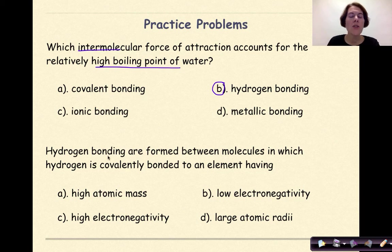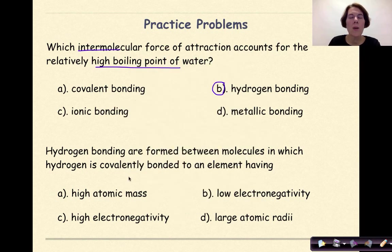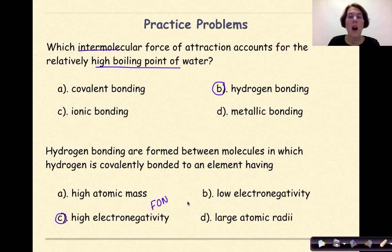Now let's look at the next question. Hydrogen bonds are formed between molecules in which hydrogen is covalently bonded to an element having: high atomic mass, low electronegativity, high electronegativity, or large atomic radii. The correct answer is high electronegativity. Specifically, we're looking for elements like fluorine, oxygen, and nitrogen — all of these elements have high electronegativities associated with them.